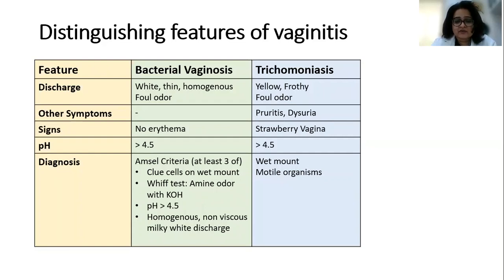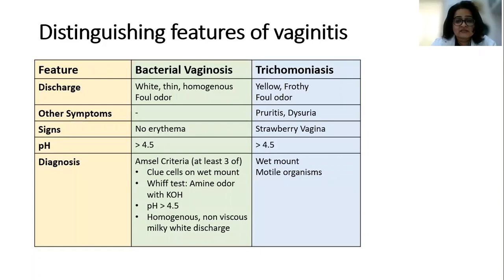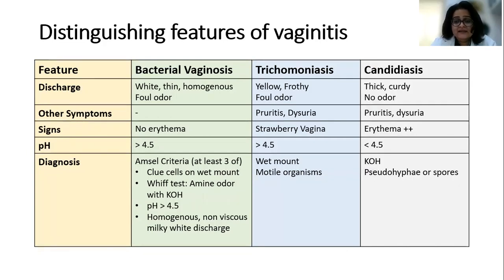The second is trichomoniasis, caused by the protozoan Trichomonas vaginalis. The discharge is yellow, frothy, and foul-smelling. The patient will also have pruritus and dysuria. When you put in a speculum you'll see a reddish vagina — that is, strawberry vagina. pH is more than 4.5, and diagnosis is by seeing the flagellate organism under the microscope.